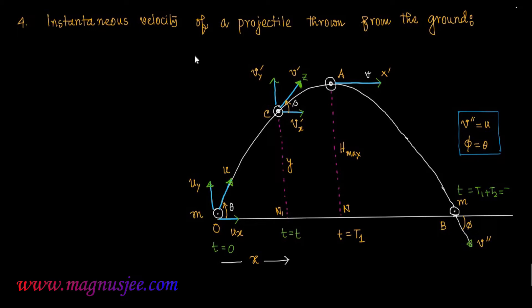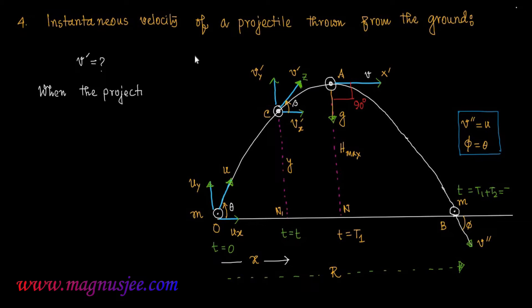At instant t equals capital T1, where capital T1 is the time of ascent. At the highest point A, acceleration due to gravity g acts vertically downwards and the angle between g and the final velocity v at the highest point A is 90 degrees. The horizontal range of the projectile is capital R, which is the displacement of the projectile when it strikes the ground at point B from the initial point of projection O.